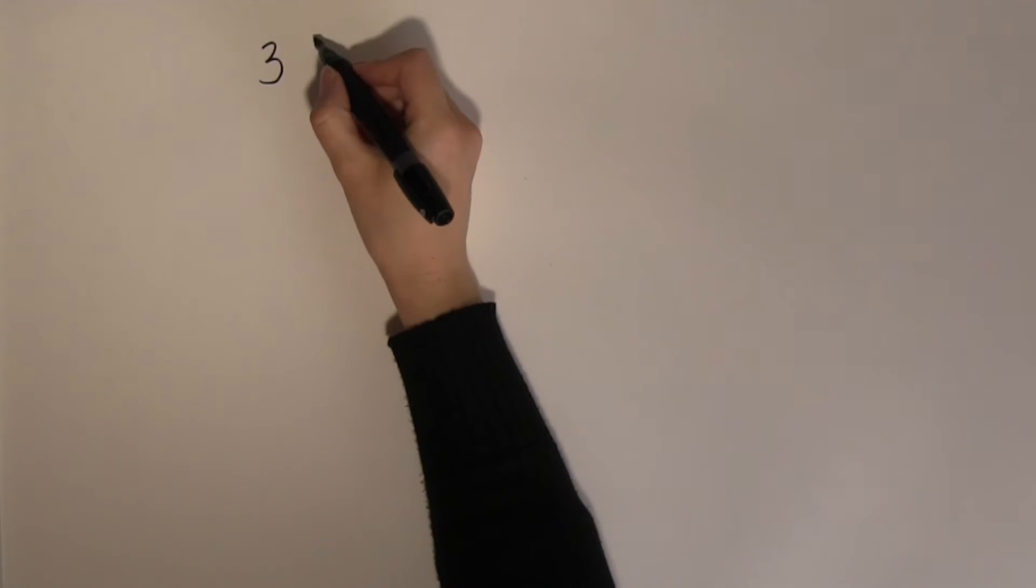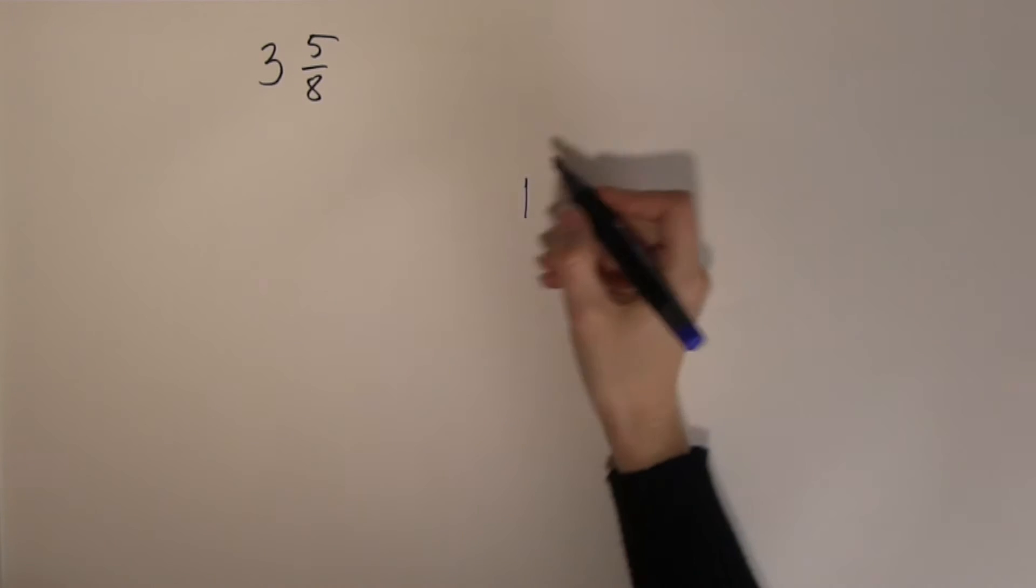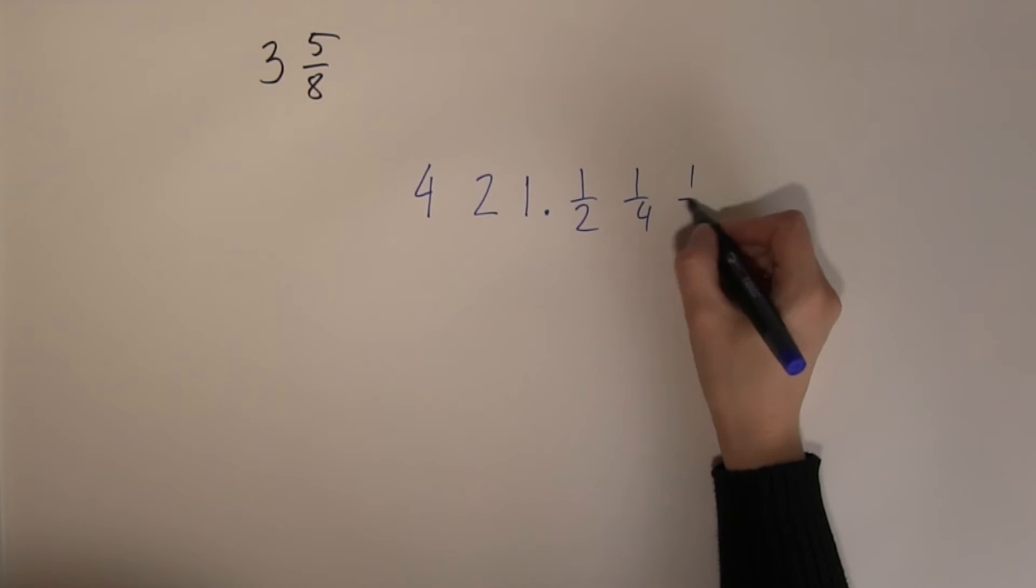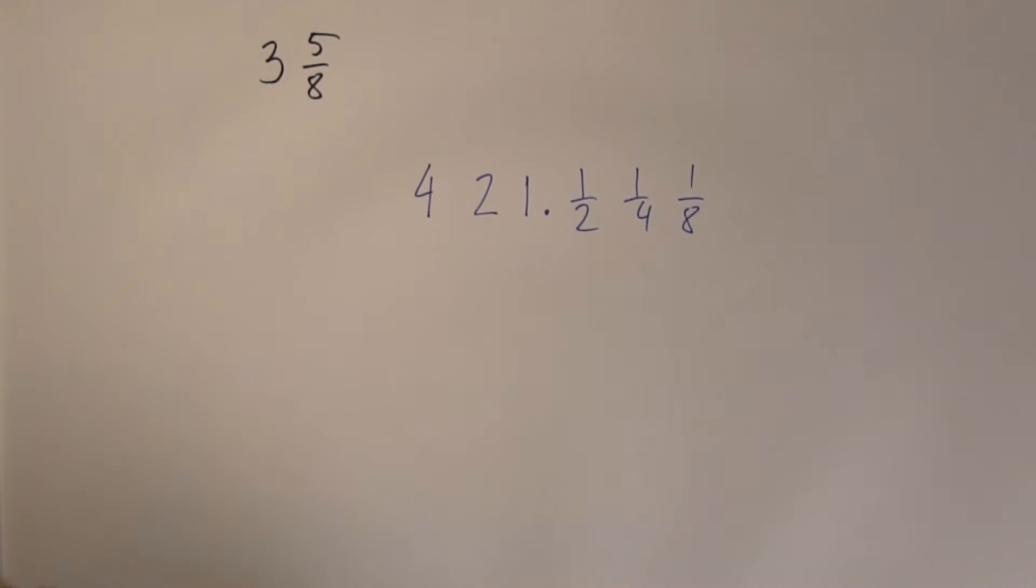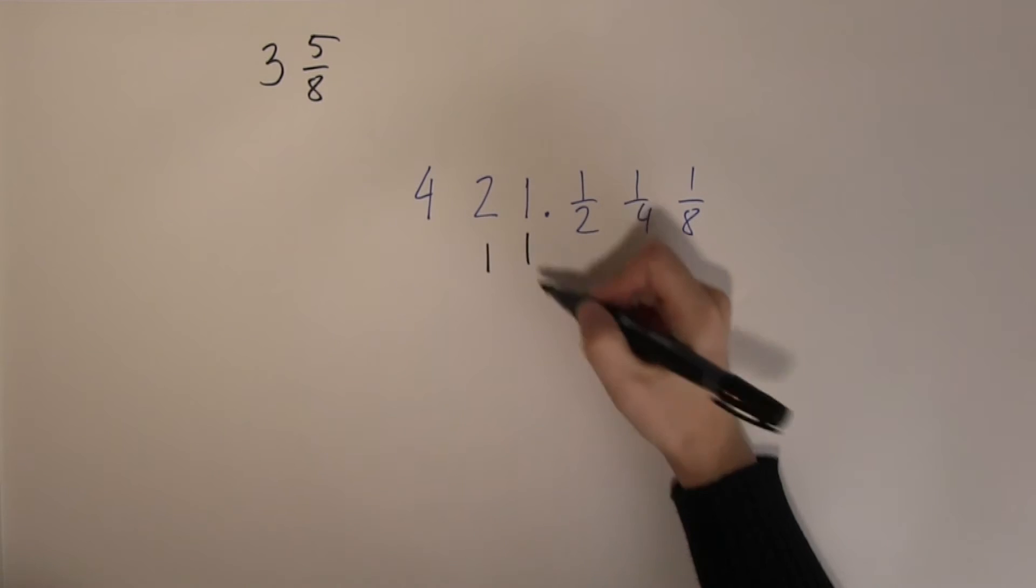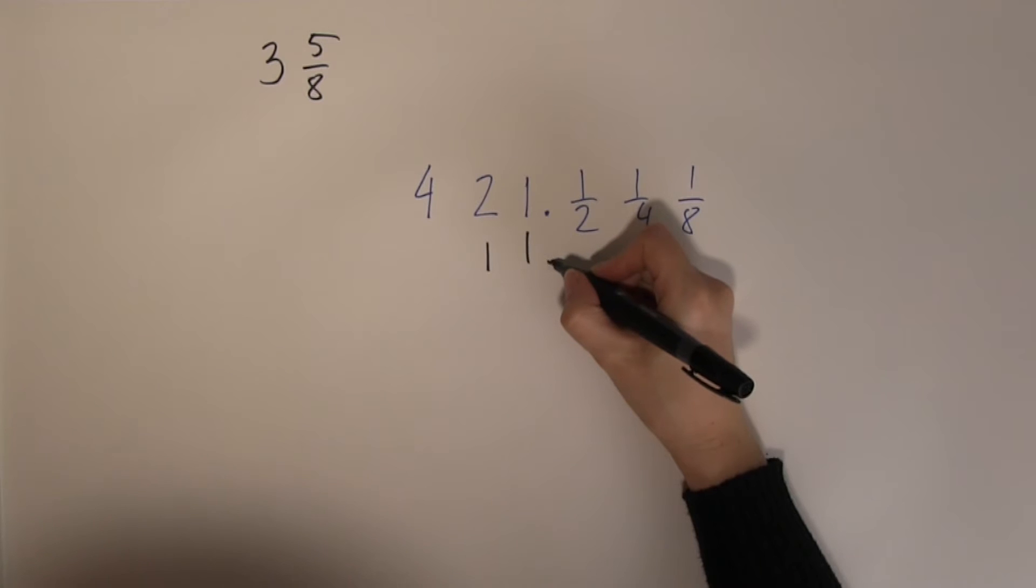Let's look at another example: 3 and 5 eighths. Now 3 is 2 plus 1, so I am going to use 2 of these place values. Radix point here.